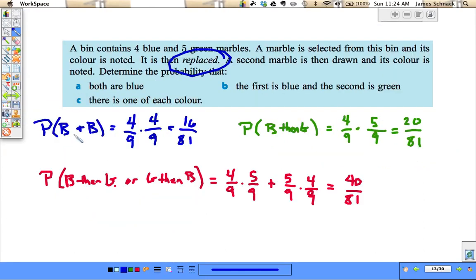Now I want to back up to this example here. Let's say that we change this to say that it's not being replaced. Well, in part A, the only thing that would change is that now instead of having four blue ones out of nine total, there would only be three blue ones left and eight total left. So the second probability changes. That's the only thing that is affected when we are no longer replacing the marbles after we sample.